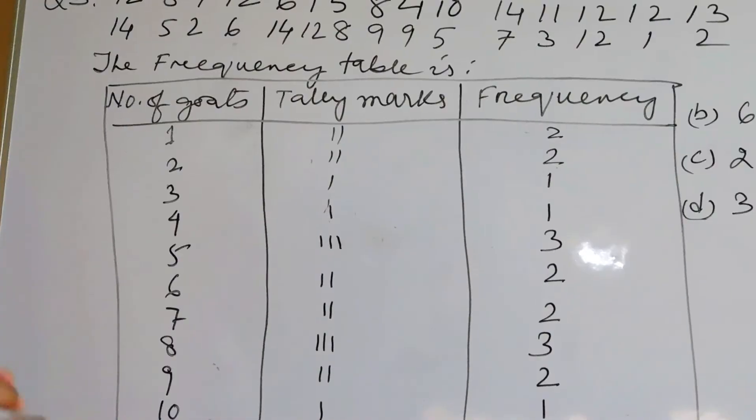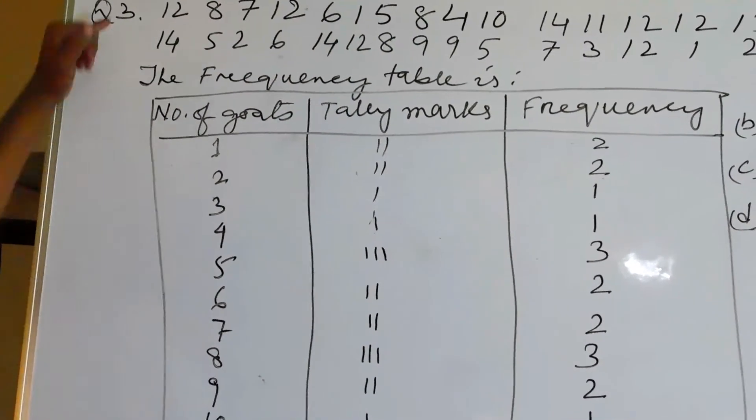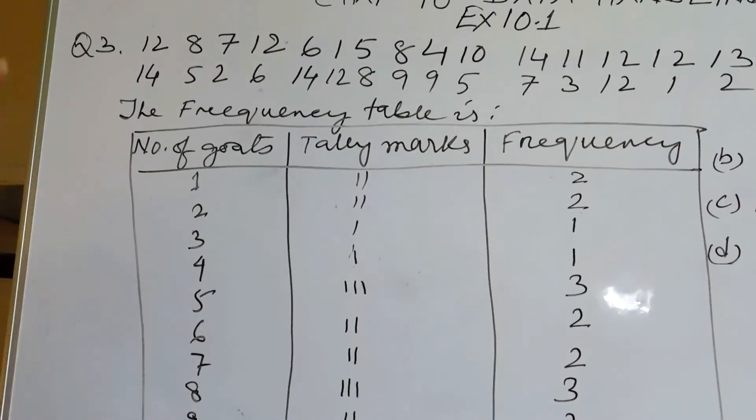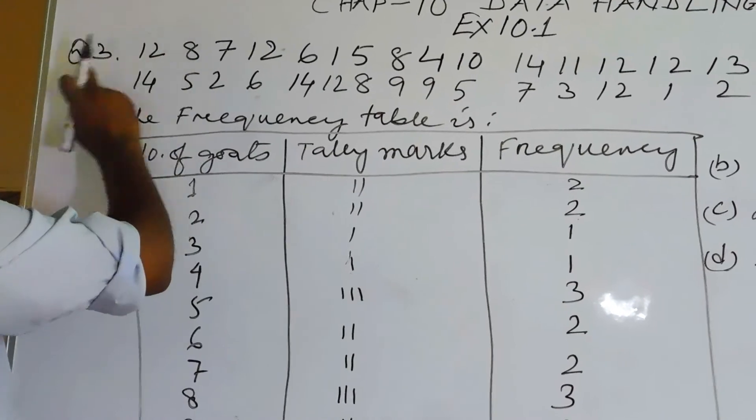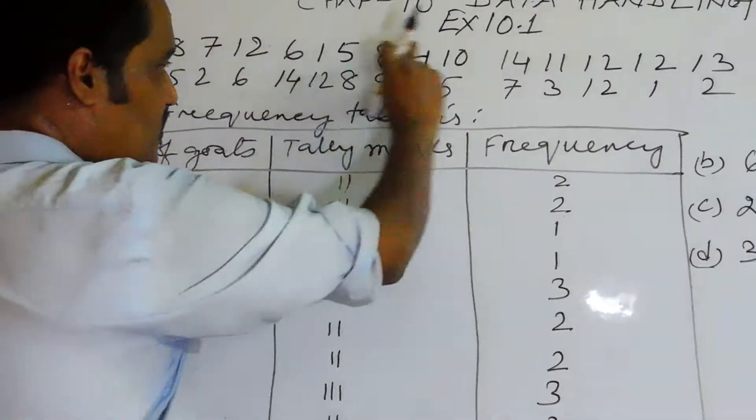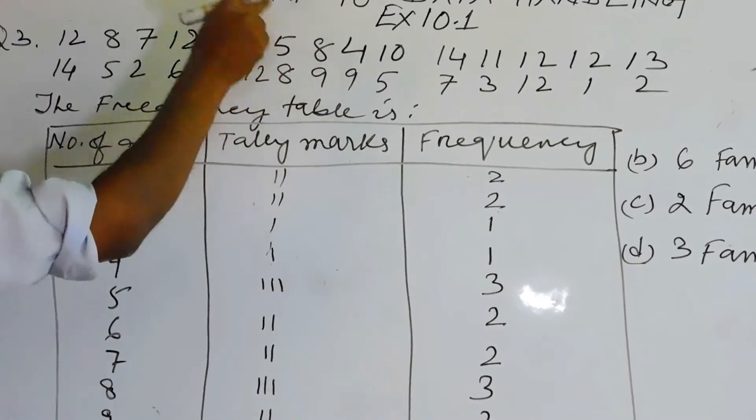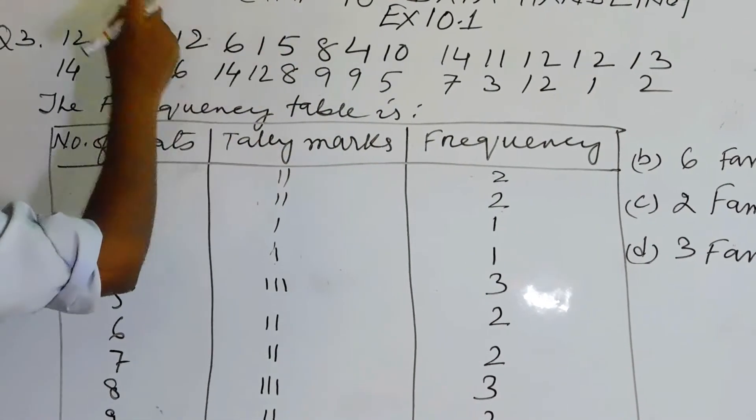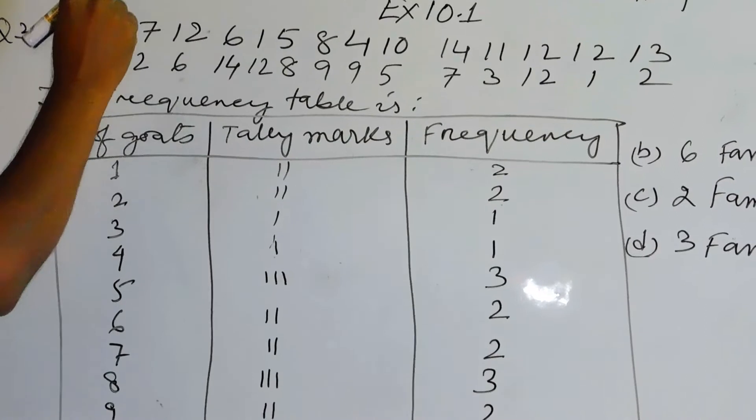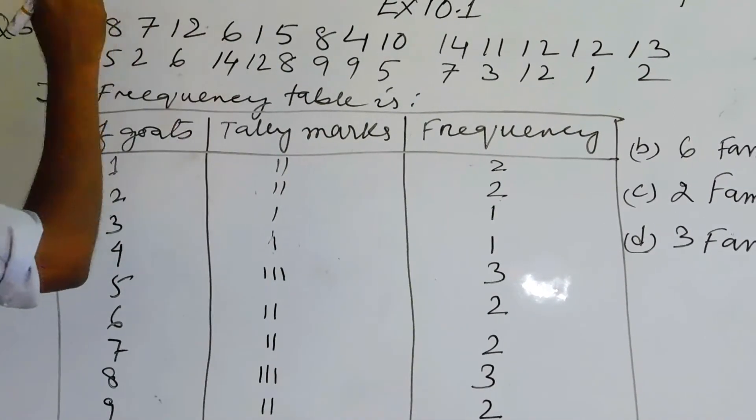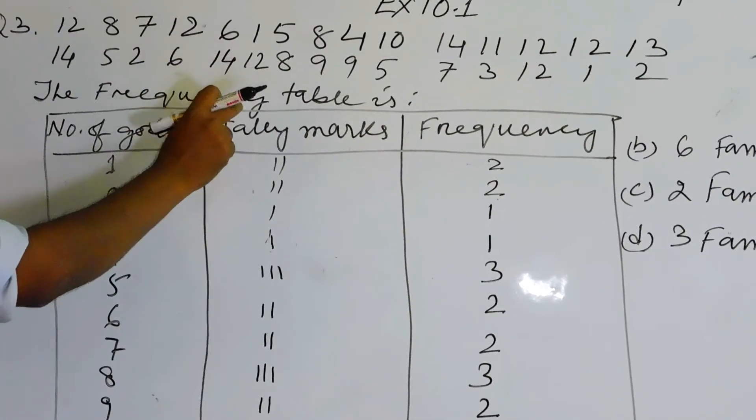Okay children now going to question number three. Question number three, as I told you from the question you will have to copy down the data carefully and tally it that you copy down each and every data without any mistake. Now the question is the number of goats read by the families.